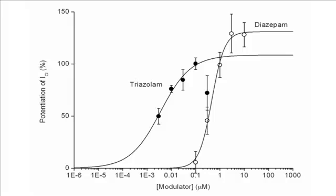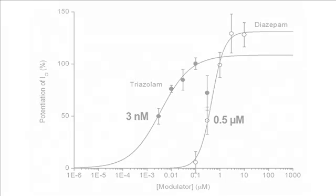The plots show dose-response curves for two positive allosteric modulators in the benzodiazepine class, namely triazolam and diazepam, for which EC50 values of 3 nanomolar and 0.5 micromolar were obtained.